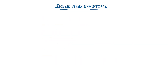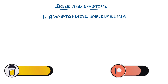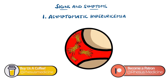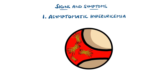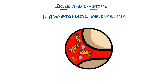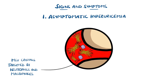Overall, gout is described as a chronic disease that has four main stages, the first being asymptomatic hyperuricemia. Although 95% of people with hyperuricemia will not develop gout, and some people with normal uric acid levels can still develop it. In this stage, there can even be the presence of monosodium urate crystals, but they are effectively walled off from interaction with inflammatory cells by a layer of proteins. However, when this layer is disrupted, the crystals are exposed and targeted by macrophages and neutrophils, generating an acute inflammatory response.